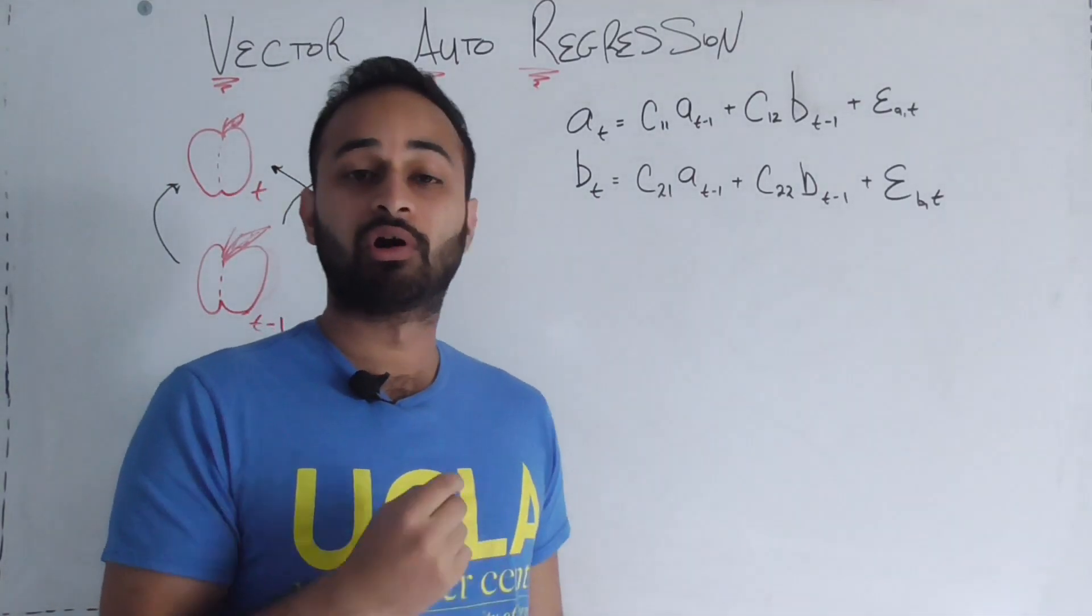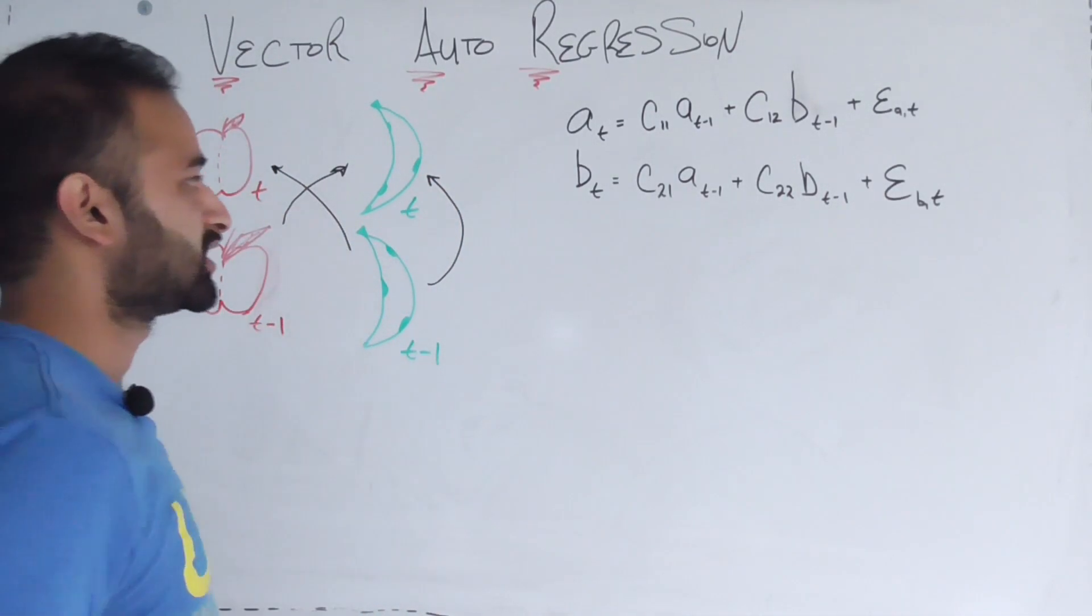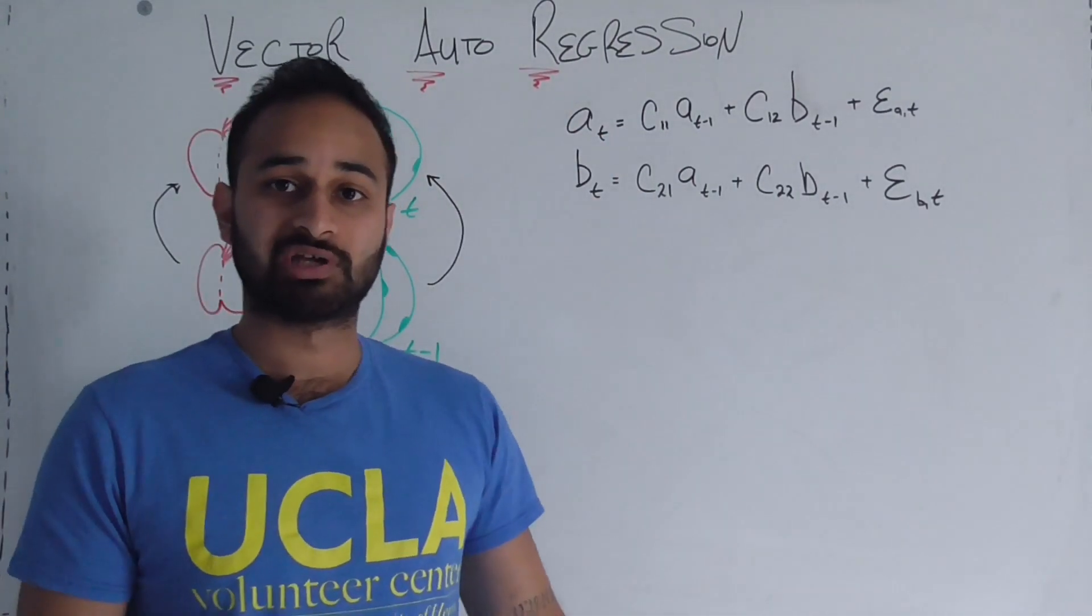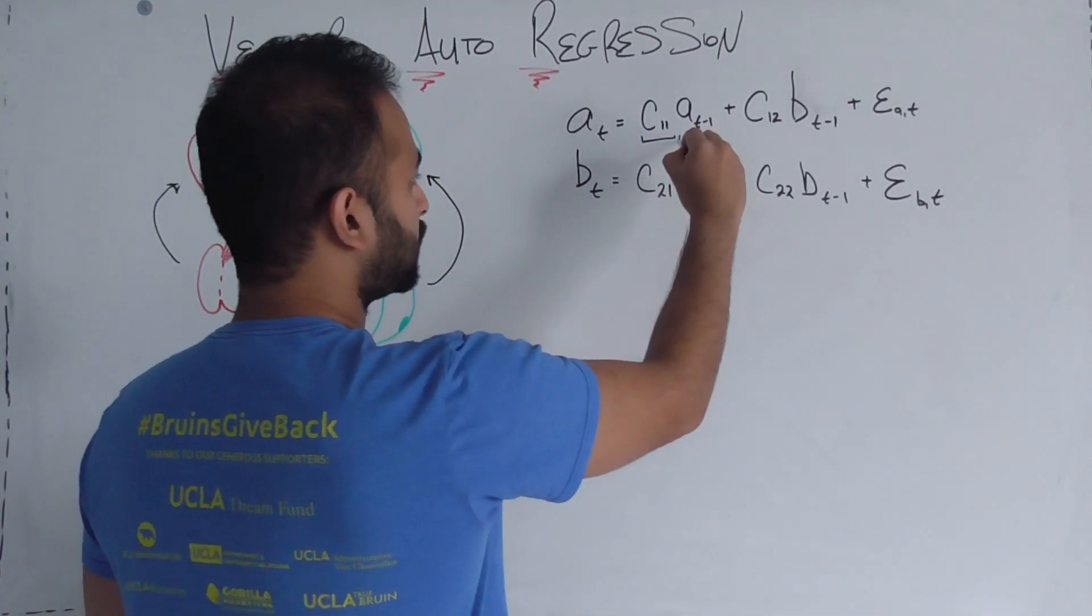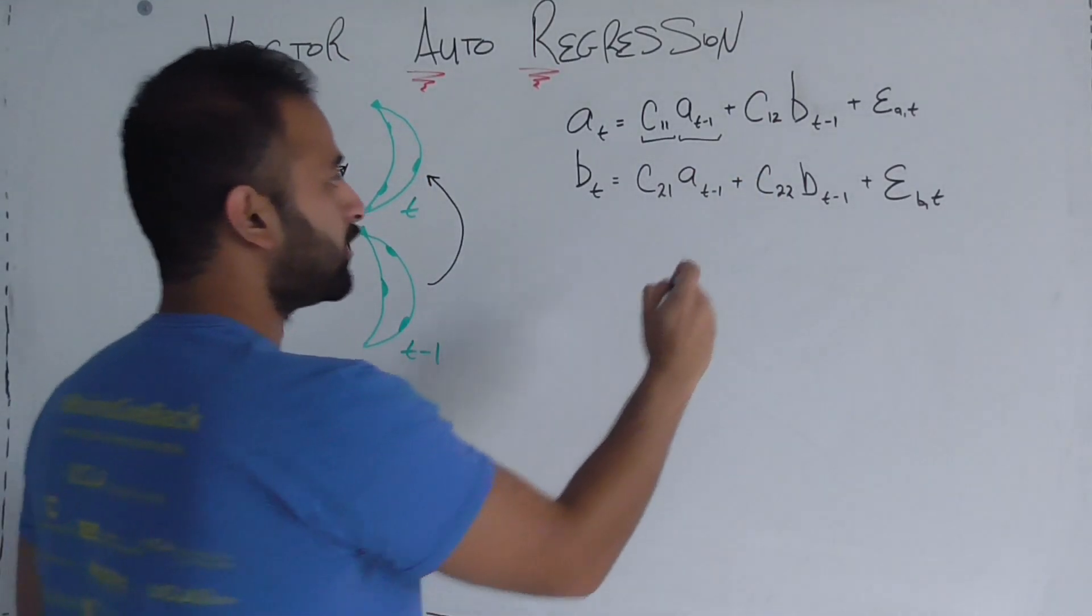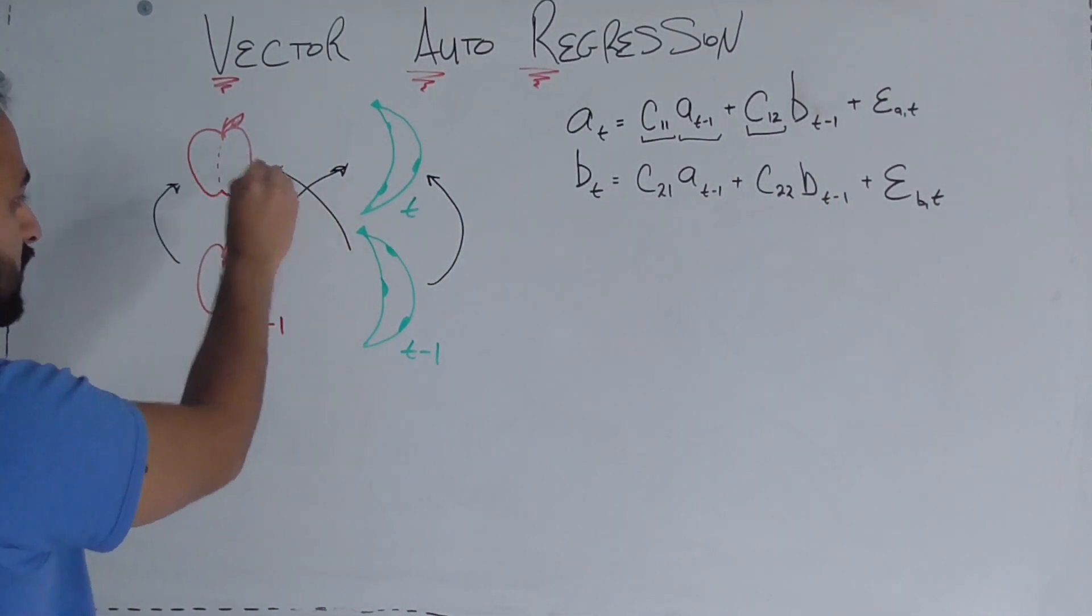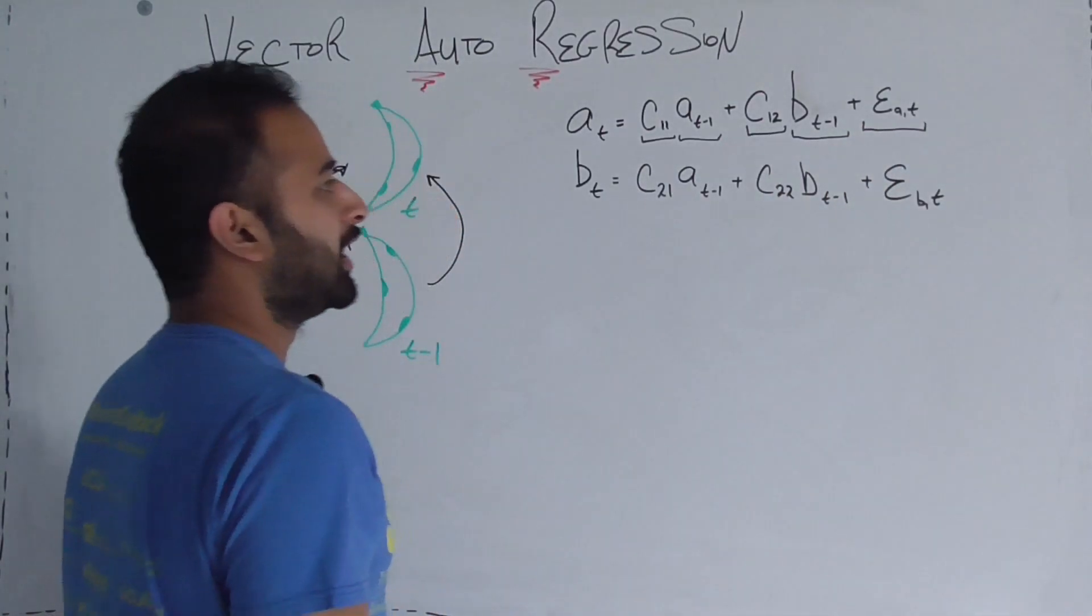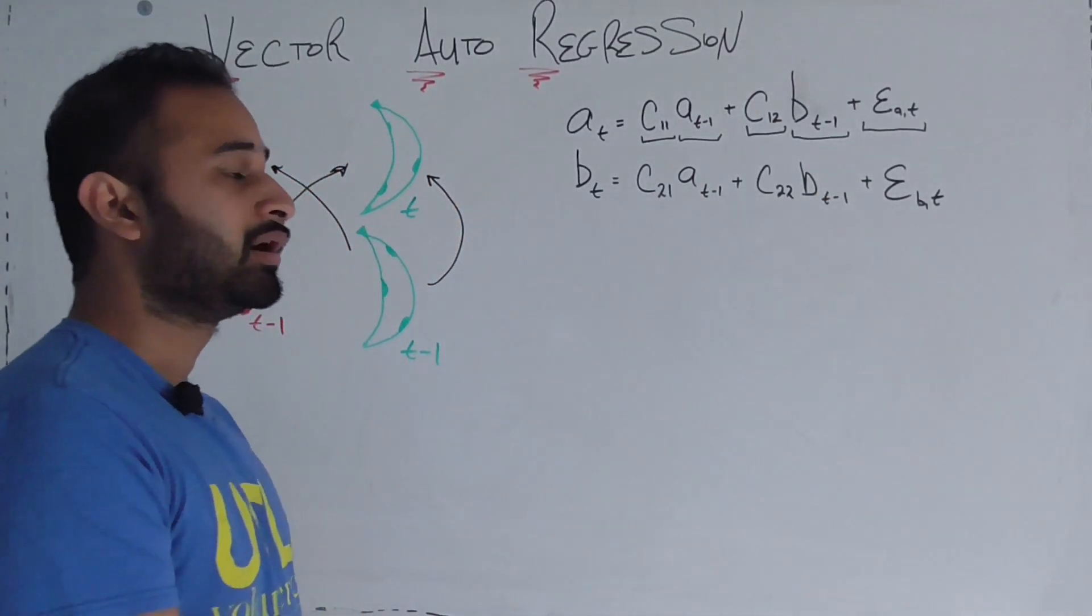Now how do we build this into our mathematical formulation? Of course we're going to need two equations because we have two different variables: apples and bananas. We're going to say that apples sold this month, a sub t, is some coefficient c11 times the number of apples you sold last month (that's what this arrow represents), plus some other coefficient c12 times the number of bananas you sold last month (that's what this arrow represents).